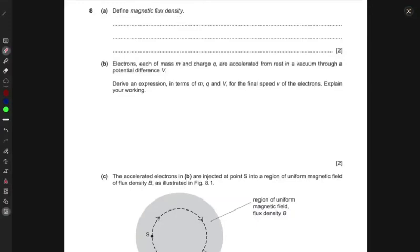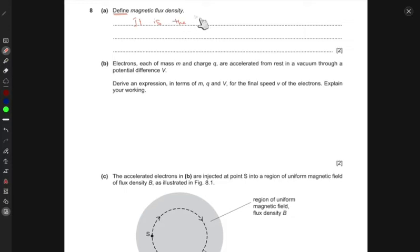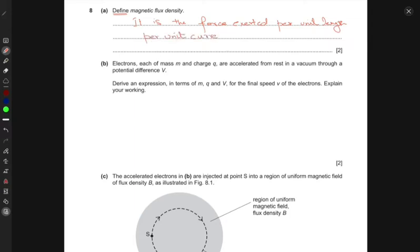Define magnetic flux density. So they're saying define, we talk in terms of the mathematical expression. We know that the magnetic flux density is the force or the magnetic force exerted per unit length per unit current, such that the length of the wire or the current is perpendicular to the field.